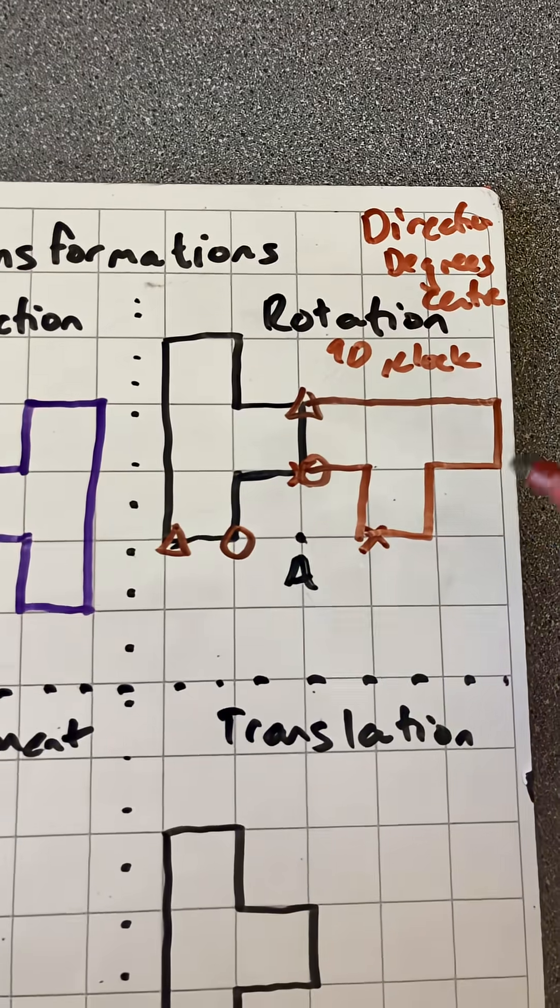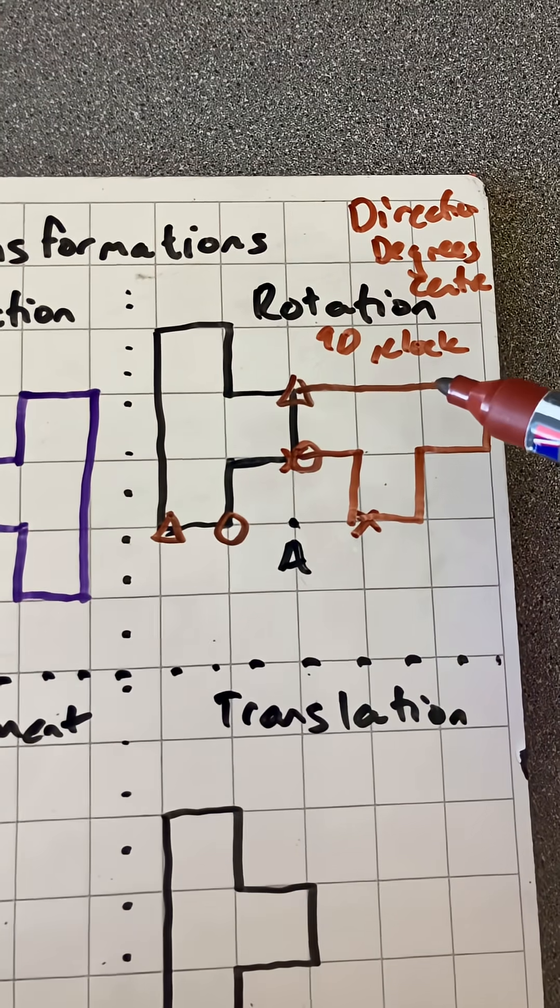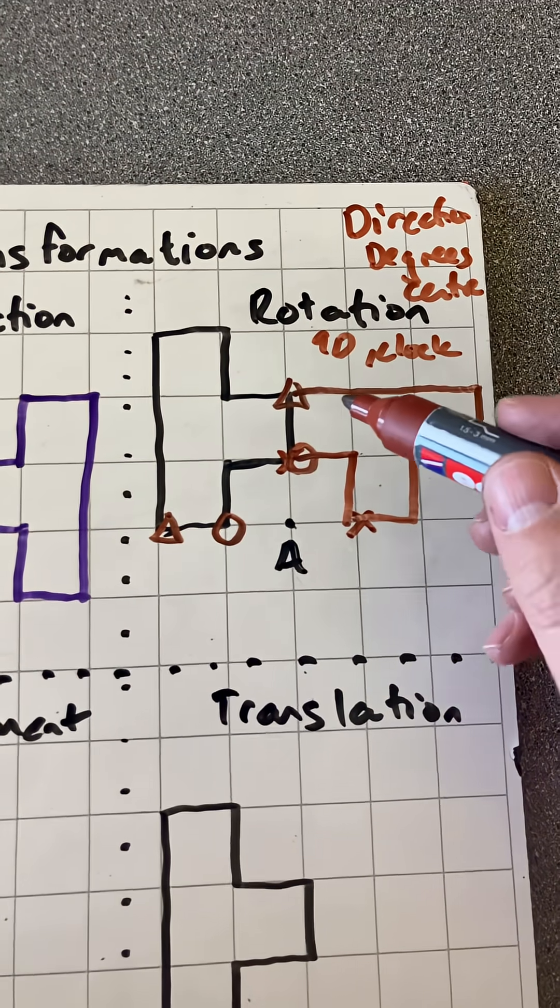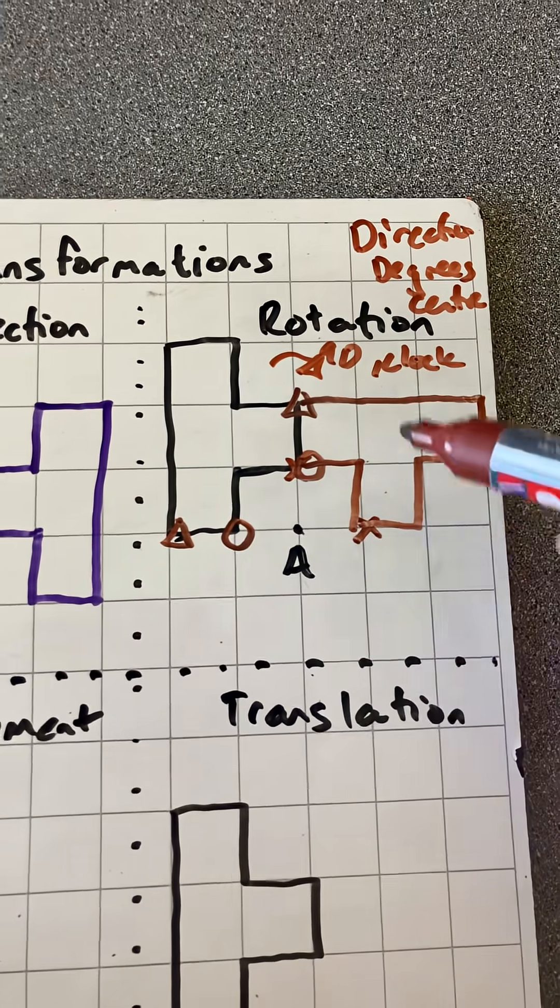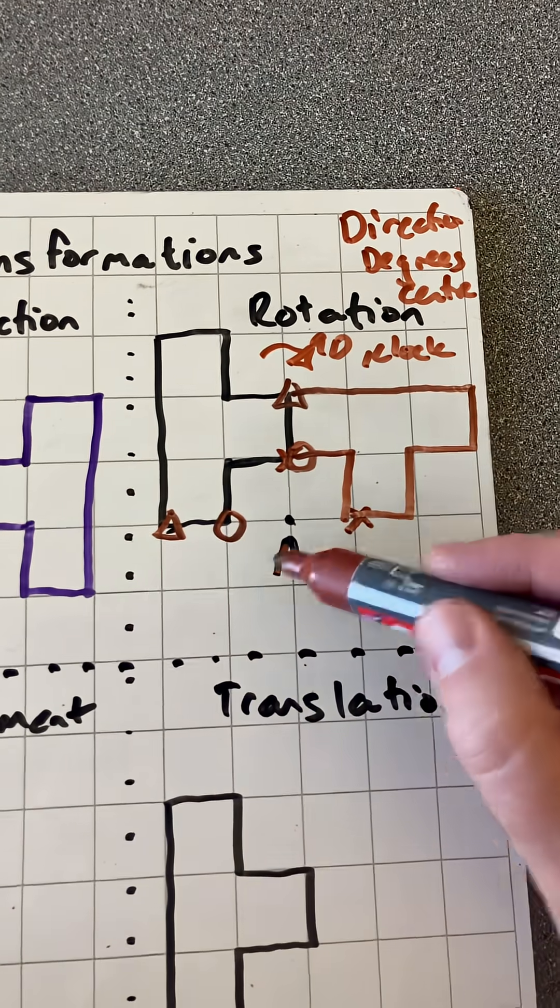So I've used counting, or you could use tracing paper, but need to know three things: the direction, which is clockwise turning that way, 90 degrees, and about the center A.